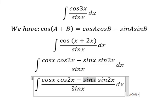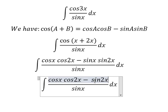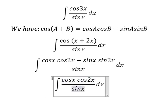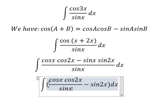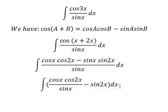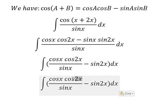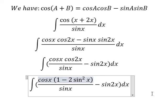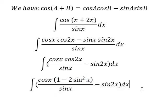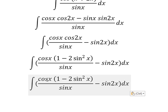So sine x divided by sine x we have one. Next, cosine 2x, that is about one minus two sine squared x. So we have cosine x multiplied by one minus two sine squared x.